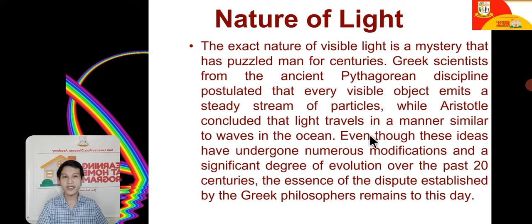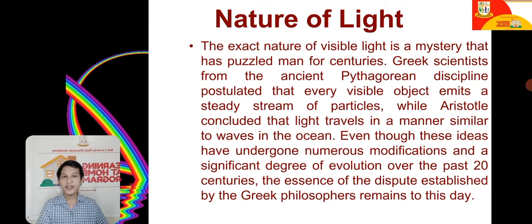Greek scientists from the ancient Pythagorean discipline postulated that every visible object emits a steady stream of particles, while Aristotle concluded that light travels in a manner similar to waves in the ocean. Though these ideas underwent numerous modifications over the last 20 centuries, the essence of the dispute established by the Greek philosophers remains to this day.